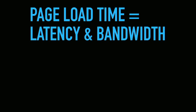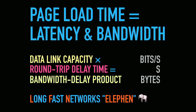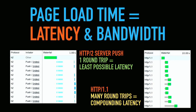Page load time is really a function of latency and bandwidth — it's called the bandwidth-delay product. Basically it's the product of your data link capacity, like a gigabit per second, and your round trip time measured in seconds — like 0.3 seconds from here to the west coast of the US. This is called the long fast network, a common case for most people around the world nowadays: you have a data center around the world, a high-powered mobile device on a speedy 4G connection, and we need to optimize for latency. HTTP2 server push basically cuts out your waterfall graph, whereas many requests compound and multiply that latency.